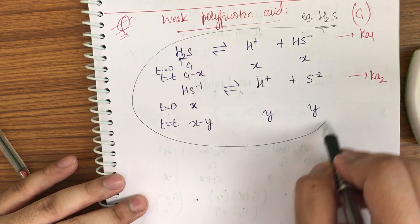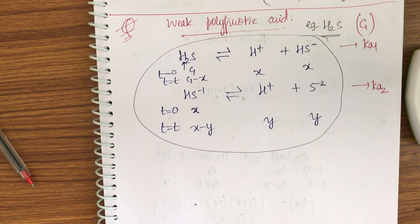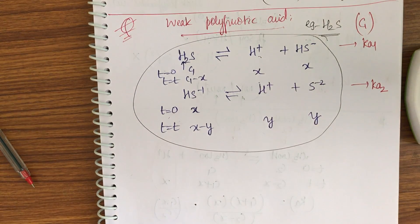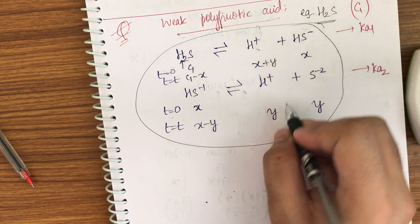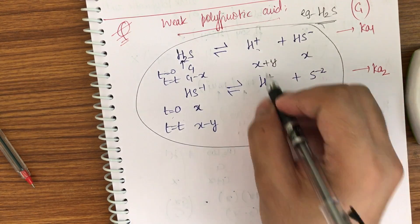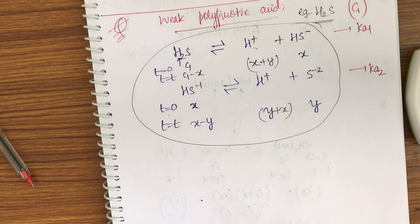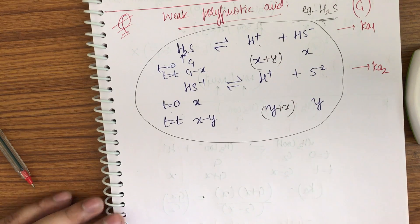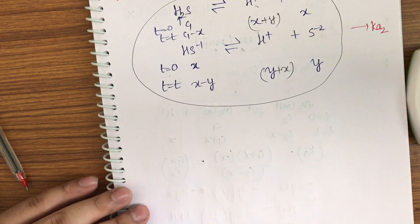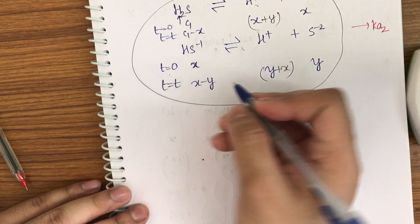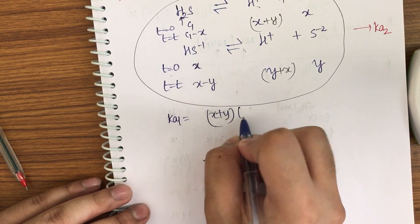The key point is that both reactions happen in the same container, so H⁺ contributions must be combined. The total H⁺ from reaction 1 includes y from reaction 2, giving (x + y); similarly for reaction 2. So Ka₁ = (x + y)·x / (C₁ − x) and Ka₂ = (x + y)·y / (x − y).